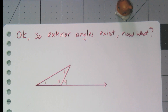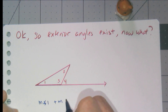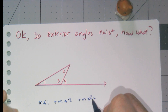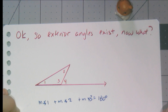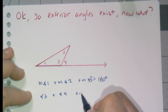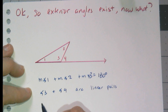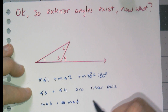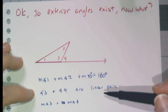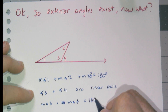We can actually prove some things about the measures of these angles. From our triangle sum conjecture, I know that the measure of angle one plus the measure of angle two plus the measure of angle three has to equal 180 degrees. And I also know that angle three and angle four are linear pairs. By the linear pair conjecture, the measure of angle three plus the measure of angle four has to be 180, because they are supplementary and add up to 180 degrees.